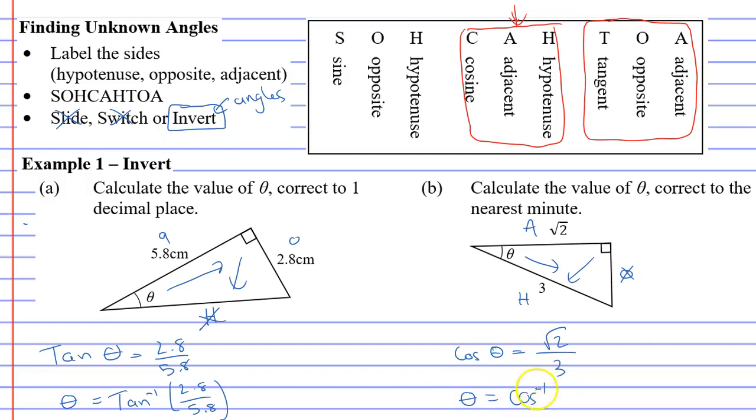And to find theta we bring the cos to the other side with a little negative one. So this is called inverse cos, and then we put our fraction in brackets.